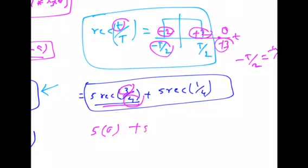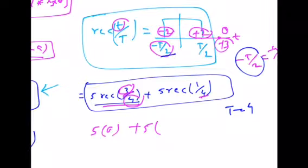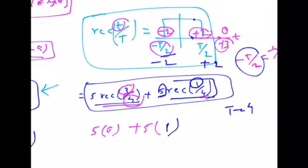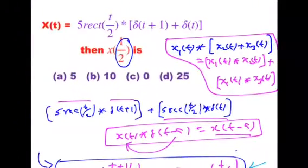For rectangle of 1 by 4: capital T is again 4, so the limits are also minus 2 to plus 2. Here we want the value at the argument 1. Since t equal to 1 lies inside the rectangle, the amplitude is 1. So 5 into 1 equals 5. Therefore, the total is 0 plus 5, giving the answer 5 at t equal to 1 by 2.